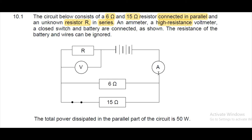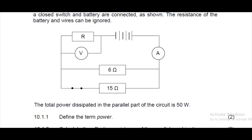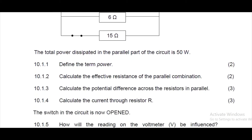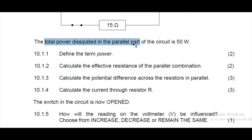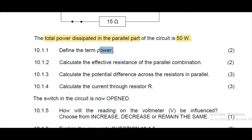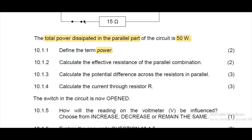There's also a switch which is closed. The resistance of the wire and the battery can be ignored. The total power dissipated in the parallel part of the circuit is 50 watts. The first question asks us to define the term power — power is defined as the rate at which work is done or energy is transferred.